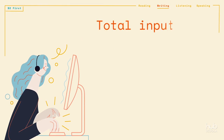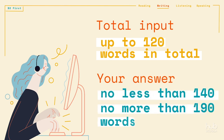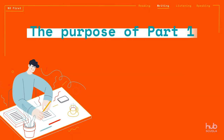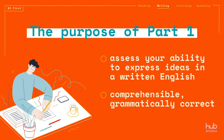The total input for Part 1 of the writing paper, which comprises the rubric, essay question or statement and prompts, could be up to 120 words in total. Read the entire input carefully to address all relevant aspects. Your answer should be no less than 140 and no more than 190 words. The purpose of Part 1 is to assess your ability to effectively express ideas in written English that is comprehensible, grammatically correct and objective in register.